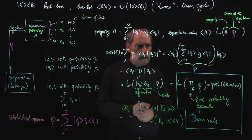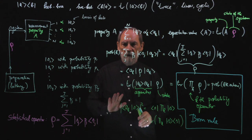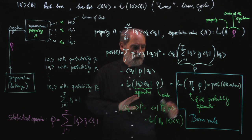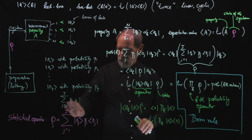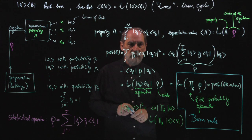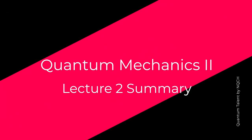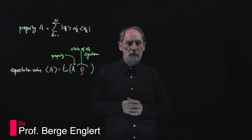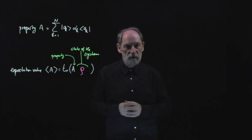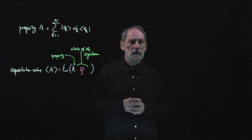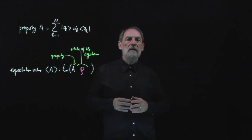This sets the stage for the next lecture, where we will study the properties of statistical operators and, in particular, look at statistical operators for qubits. In summary, we learned that the expectation value of a physical property is the trace of a product of two operators: one for the physical property, and the other for the state of the system.